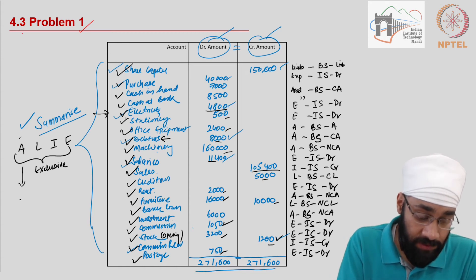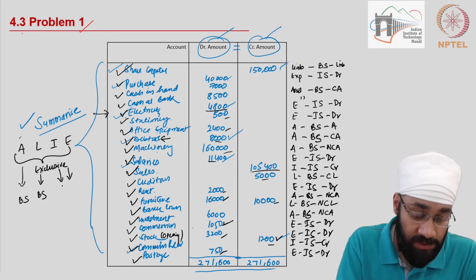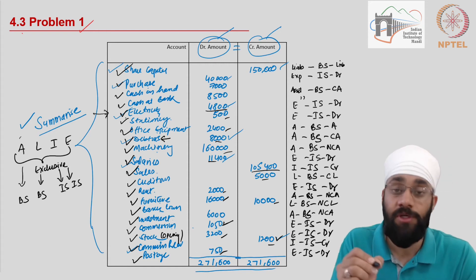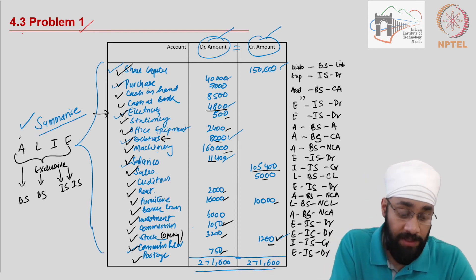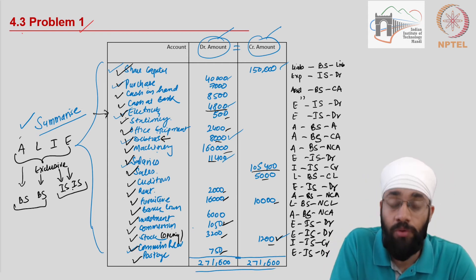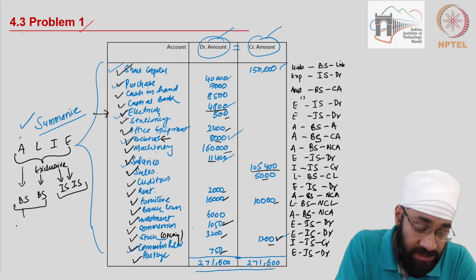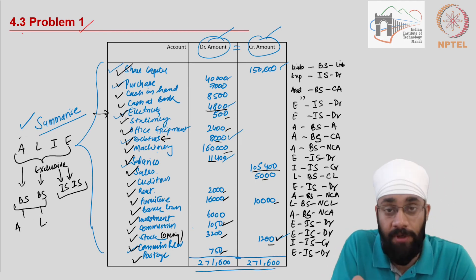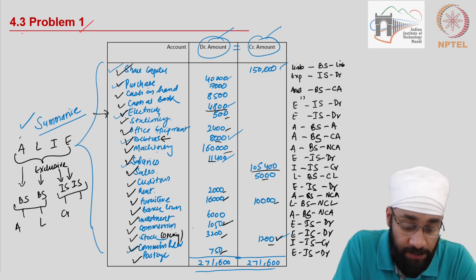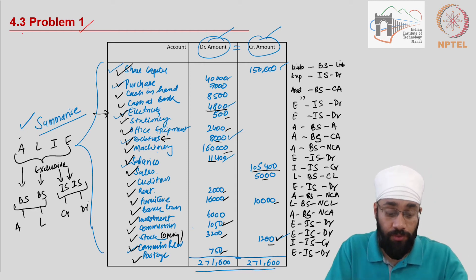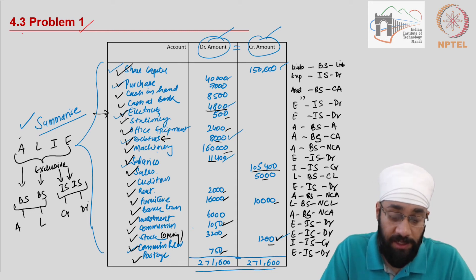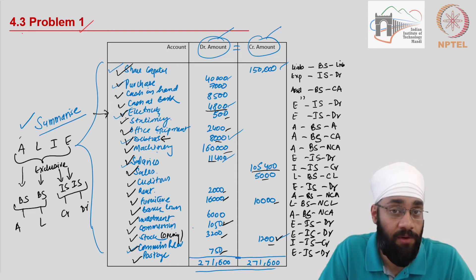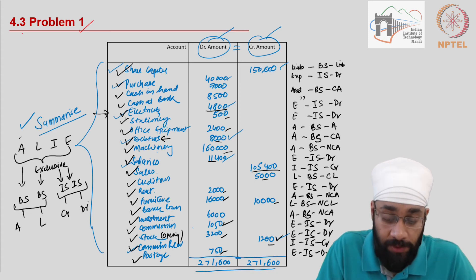Whenever you have an asset or a liability, it goes to the balance sheet. Any income or expense goes to the income statement. All assets are shown on the asset side; all liabilities on the liability side. Incomes are shown on the credit side; expenses on the debit side. As a rule of thumb, when preparing final accounts, each item goes to only one place — this also takes care of the double entry system.